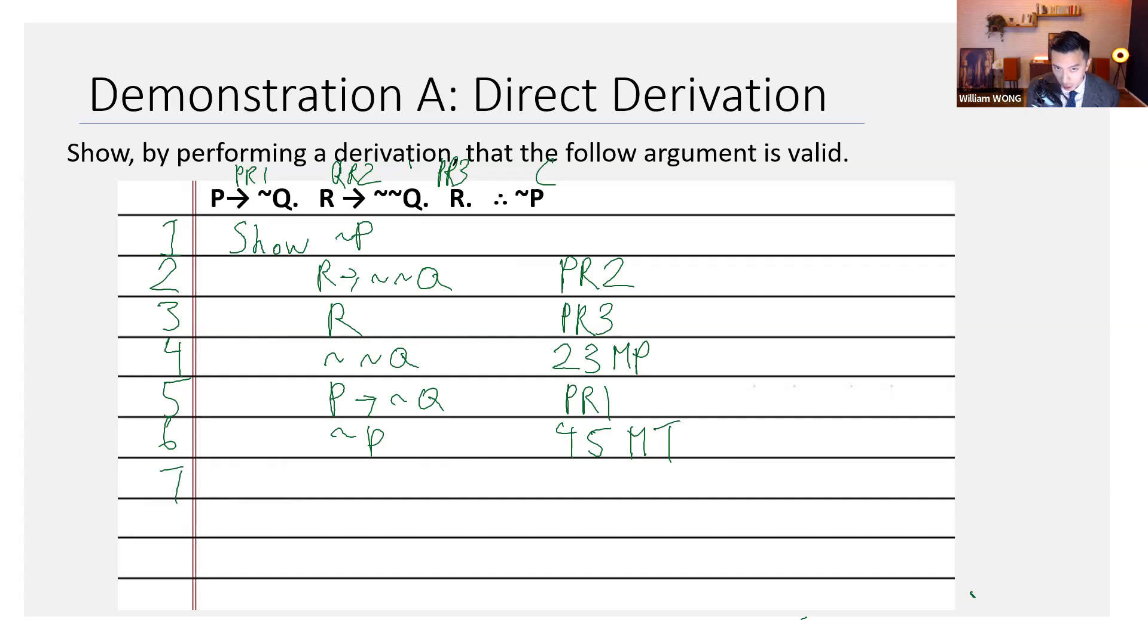So if you take a look at line six, we see that's the conclusion we want to show. We want to show that because it's also denoted by our line one. So line one says, okay, let's try to show not P.